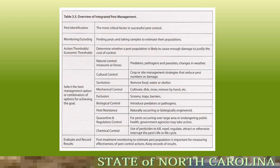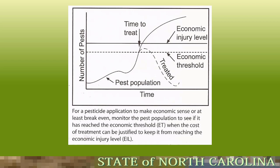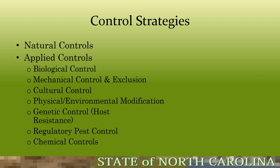For a pesticide application to make economic sense, you must monitor the pest population to see if it has reached the economic threshold. When the cost of treatment can be justified to keep it from reaching the economic injury level, that is the time to treat. Looking at this chart of pest numbers over time — the economic threshold is when we need to treat; if it goes over the economic injury level, it will cost too much and you may lose the crop anyway.